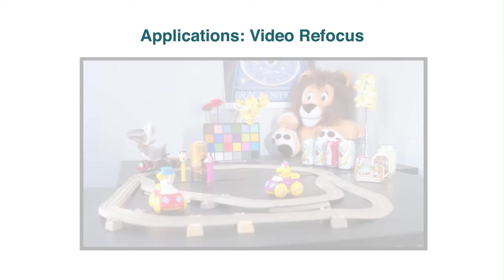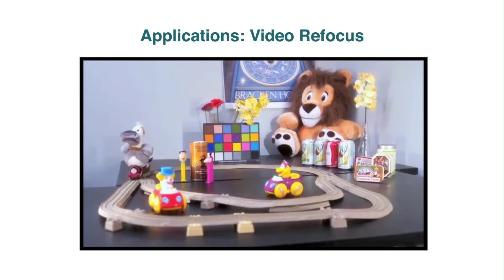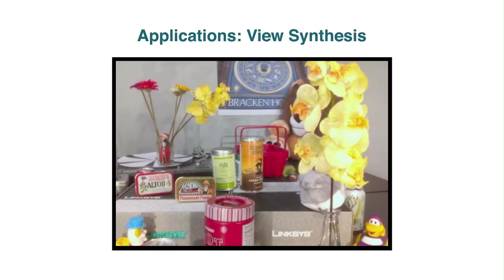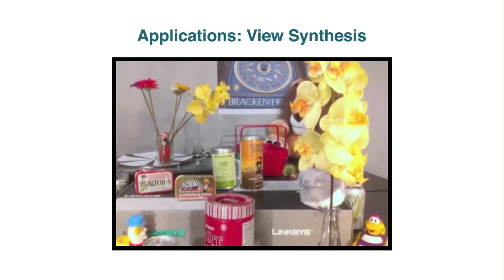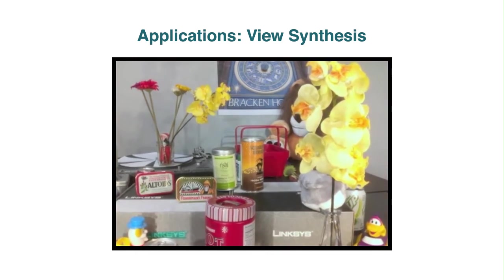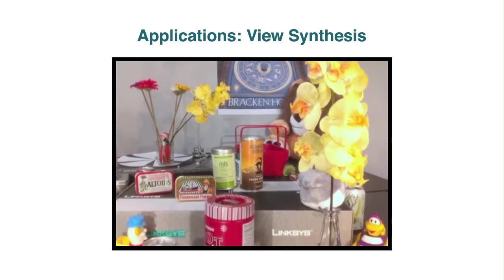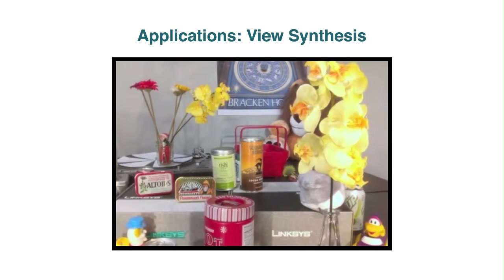PiCam can synthetically refocus video as well. Here we maintain focus on a moving target as it moves around a toy train track. We also generate synthetic viewpoints from virtual points along the array's aperture. All the information is captured in a single snapshot, and intermediate virtual viewpoints can be reconstructed digitally in post-processing. The motion parallax seen here allows one to get a qualitative sense of the depth of the scene without having to wear any special glasses.